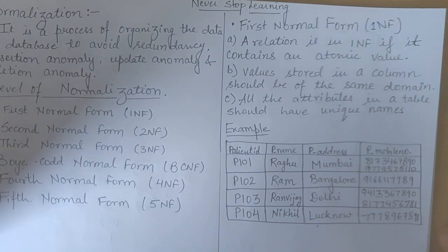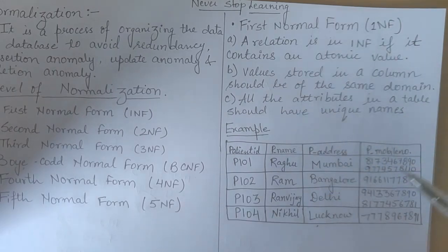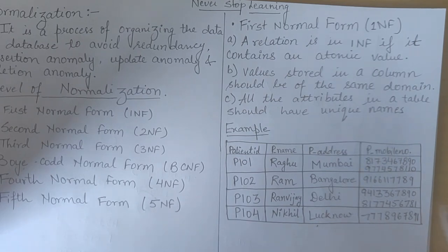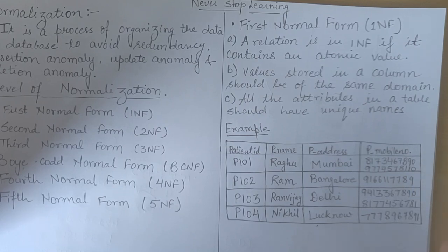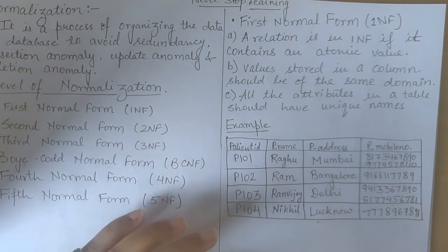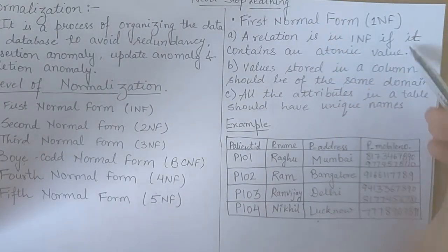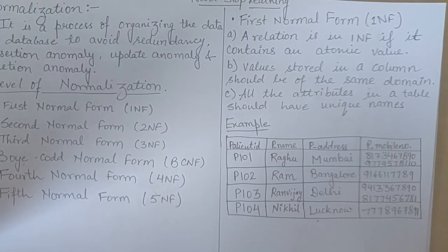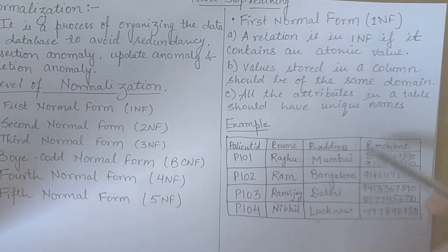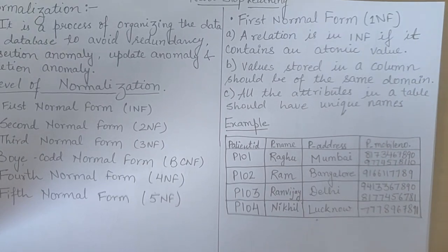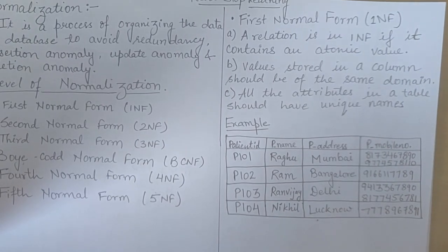The second rule is: values stored in a column should be of the same domain — the column type should be the same. It should not be that some values are of integer type and others are of character type; that is not allowed. The third rule is: all the attributes in a table should have unique names. These are the three rules every table should follow, and if it follows them, it will be in 1NF.